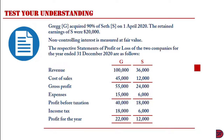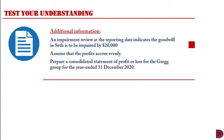Let's test our understanding one more time. Greg Jane acquired 90% of CETS on 1st April 2020, meaning three months had already elapsed, so we take only 9 out of 12 months for the subsidiary. The retained earnings of S were $20,000. Non-controlling interest is measured at fair value. An impairment review at the reporting date indicates that goodwill is to be impaired by $20,000. We assume profits accrue evenly. We are to prepare a consolidated statement of profit or loss for the Greg Jane group for the year ended 31 December 2020.